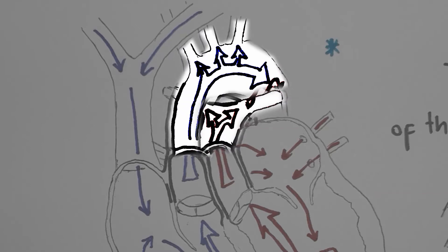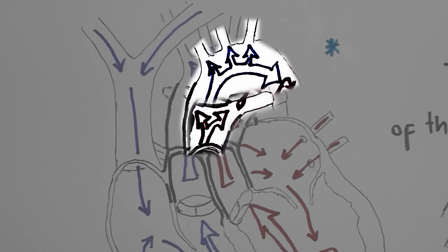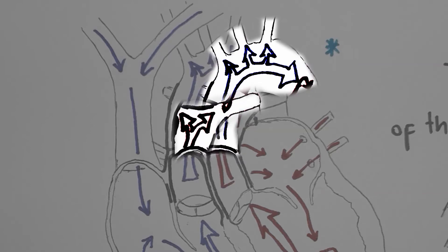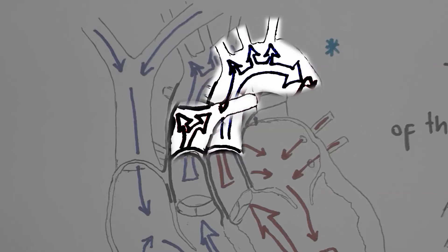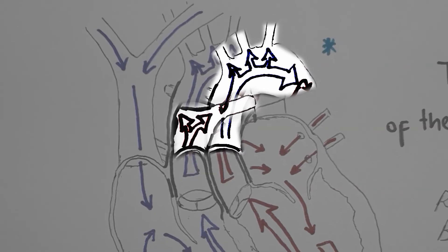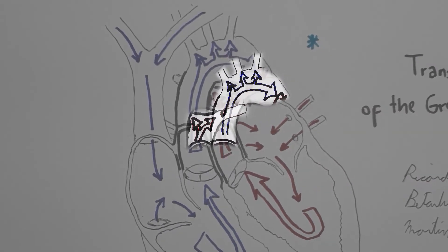If there is a ventricular septal defect, its closure may need to be done along with the arterial switch procedure. Finally, in case there is some kind of ventricular outflow obstruction, an additional conduit may be necessary to connect ventricle and respective artery.